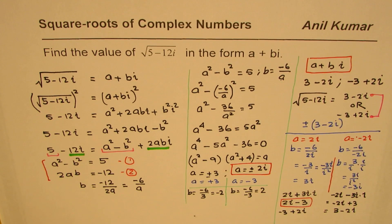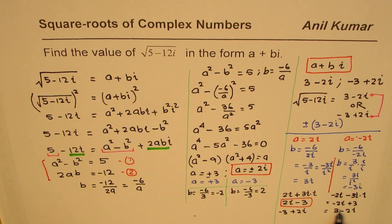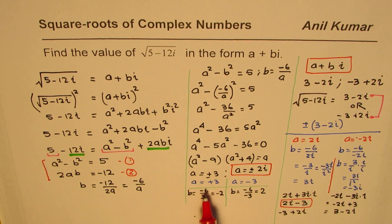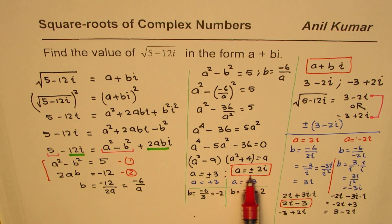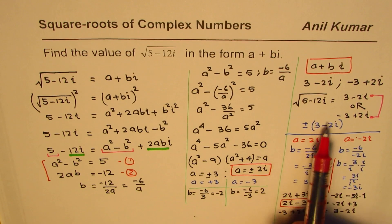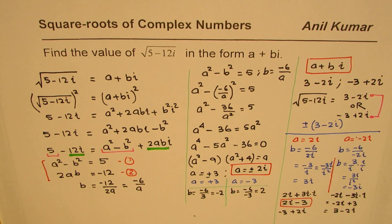What we observe is that both sets of values of a give the same results, which is very interesting. In a test, you can work with just one set and note that the other gives the same result. This is a very important conclusion. I hope that helps. I'm Anil Kumar — please share and subscribe to my videos. Thank you and all the best.